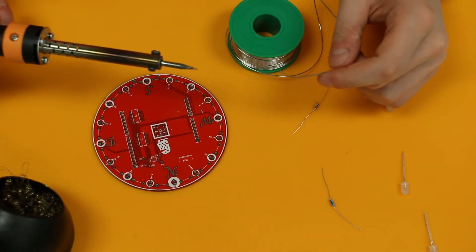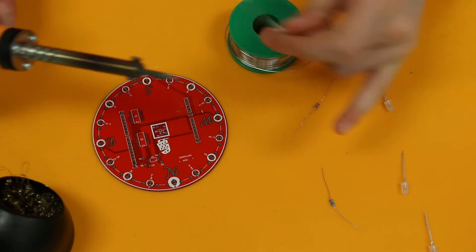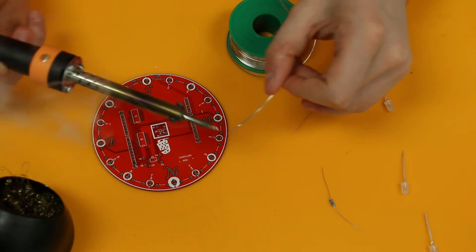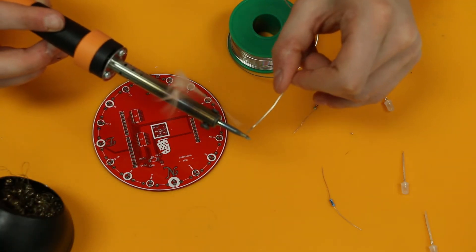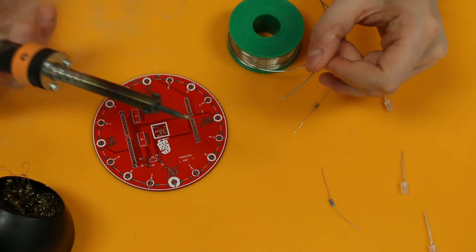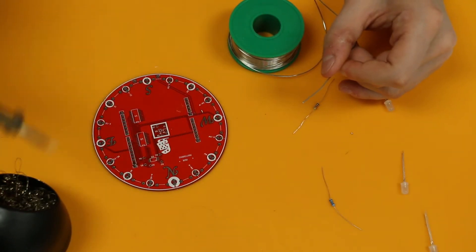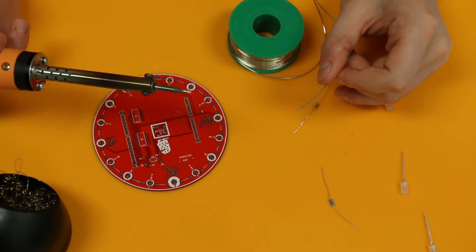So your first step is to tin your soldering iron. You want the very tip to be nice and shiny. So how we do that is by adding some solder wire to the tip of our soldering iron. And then putting it in our sponge and cleaning it off, giving us a nice shiny soldering iron.